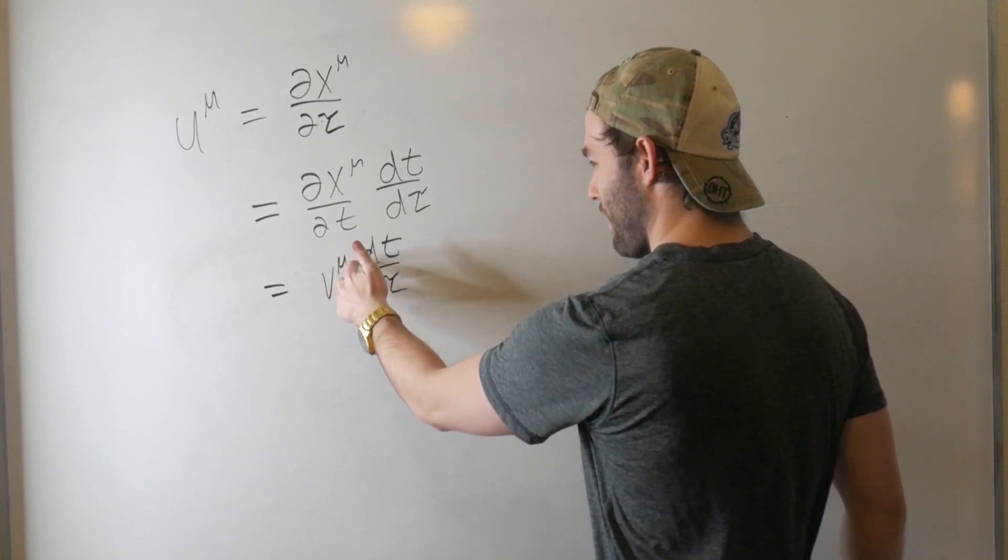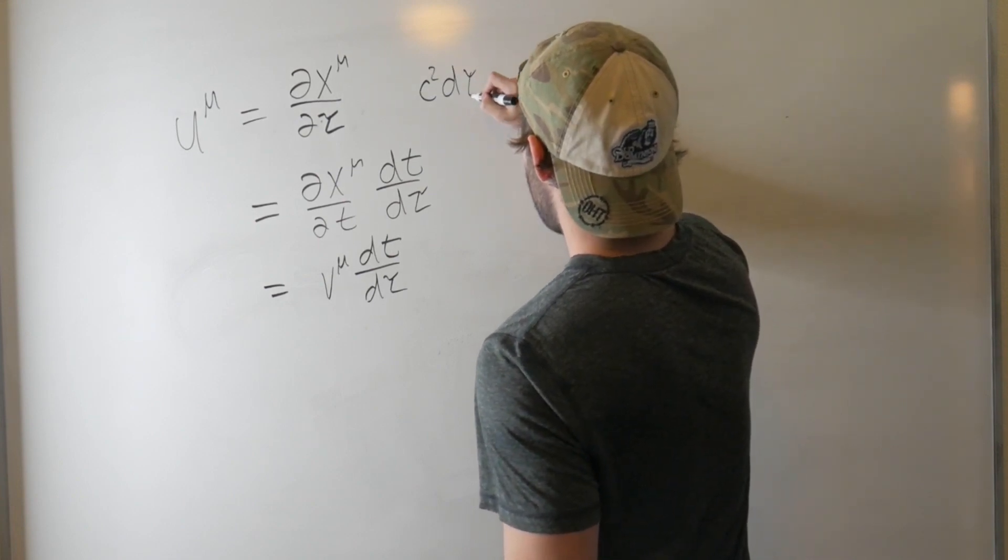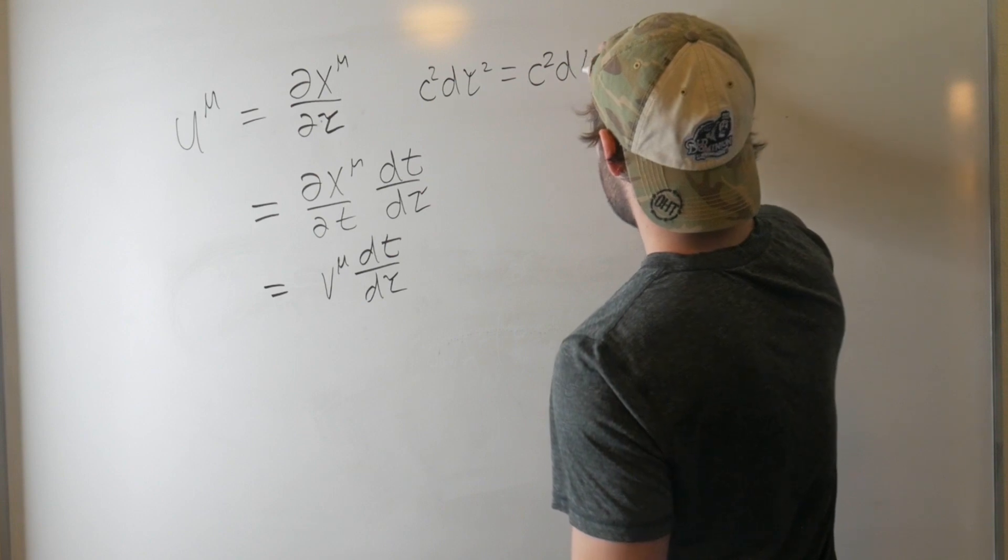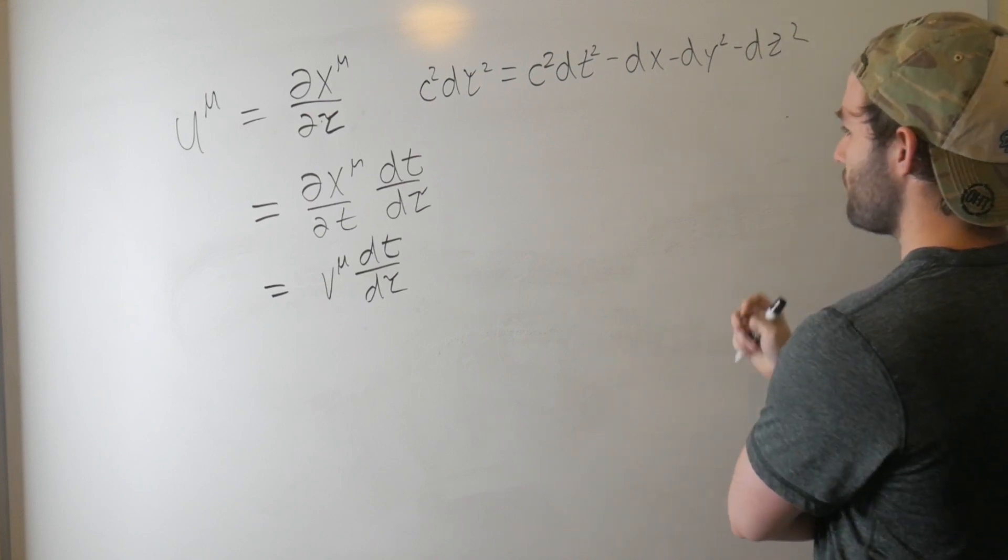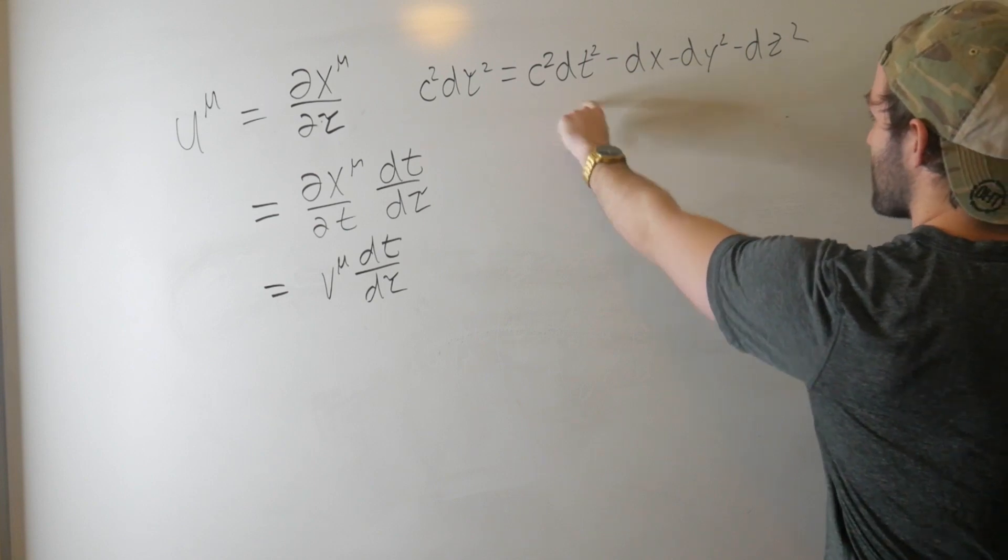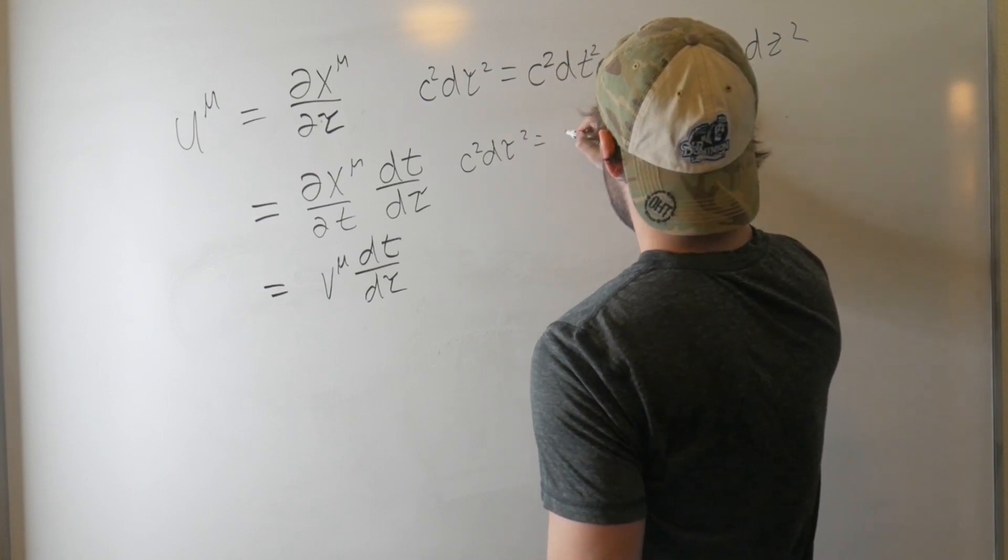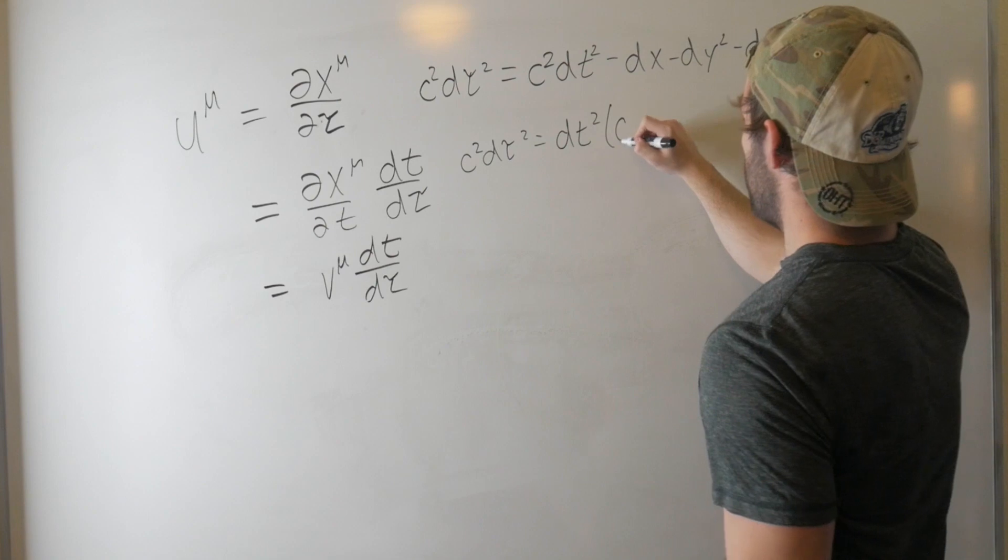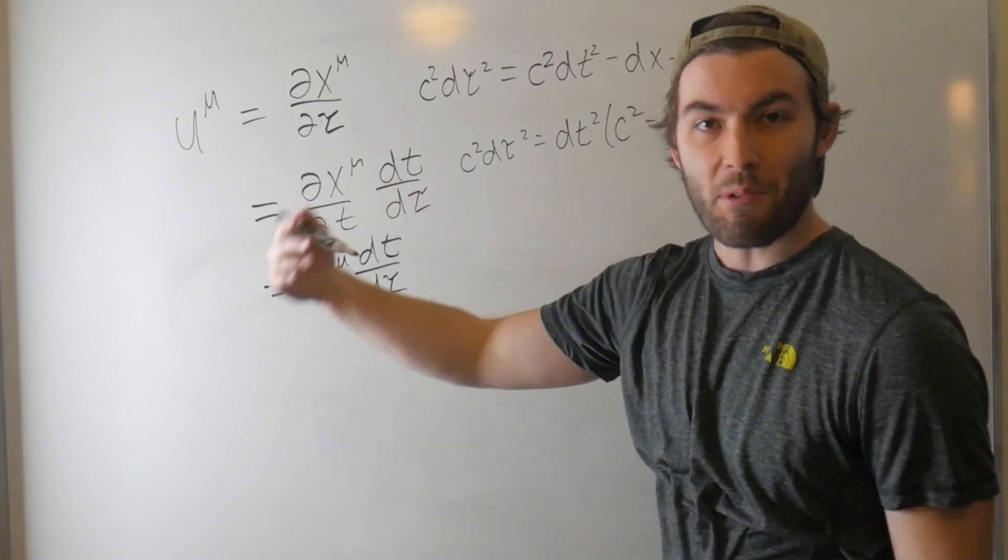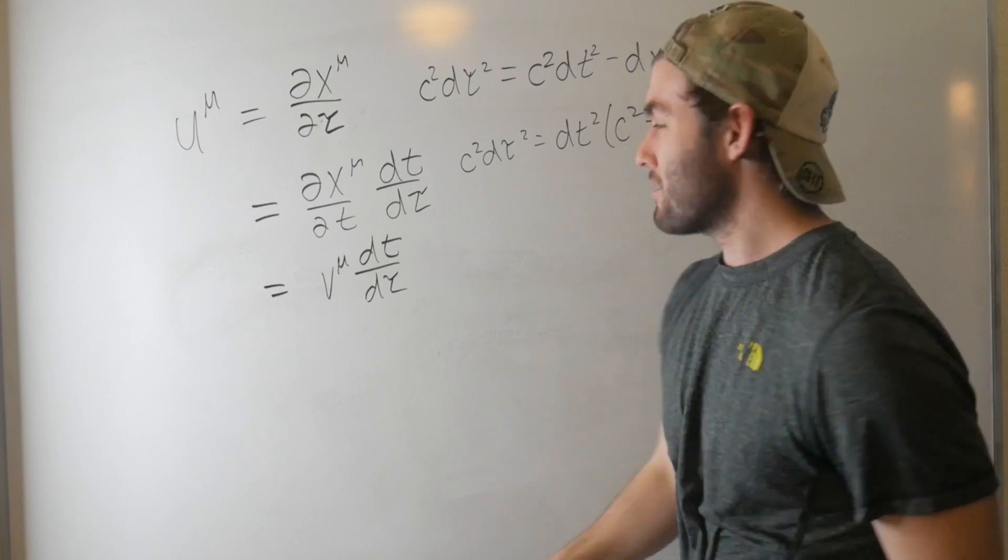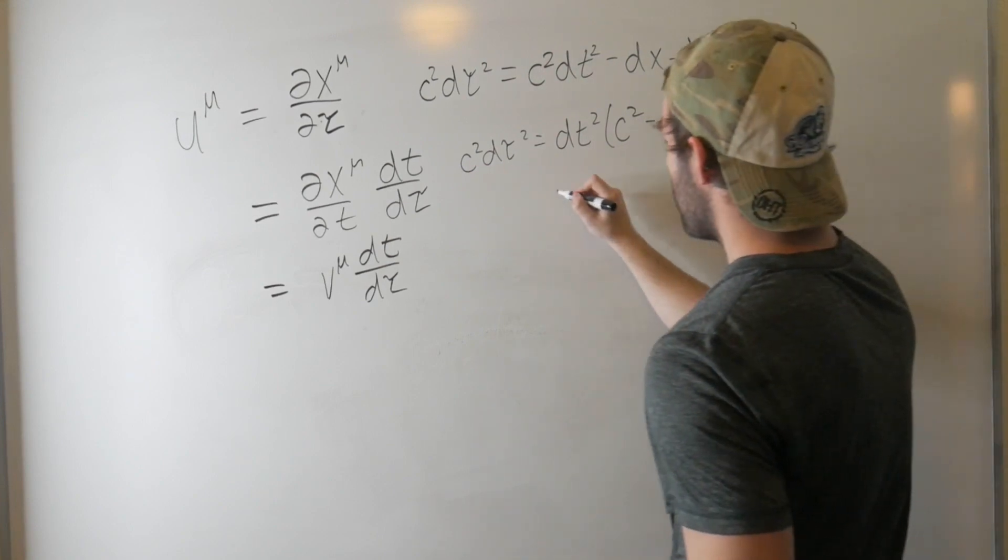So, let's take a look at our space time interval real quick. We know that c²dτ² is equal to c²dt² minus dx² minus dy² squared minus dz². Okay. Let's go ahead and factor out our dt² from everything. And we get that c²dτ² is equal to dt² c² minus... Well, if we're dividing by dt² in all of these, it's dx dt times dx dt, dy dt times dy dt. These are just...